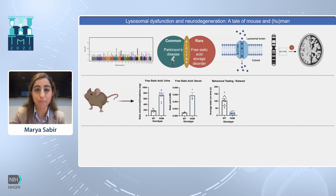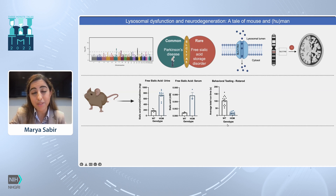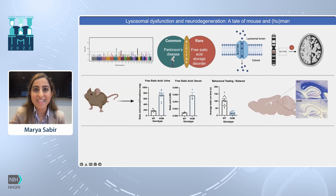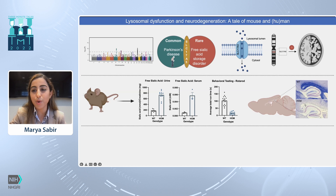Next, we performed behavioral testing using the rotor rod, and we can see that mutant mice have poor motor performance and coordination, which resembles human patients. And strikingly, in mutant mice, we have a complete loss of corpus callosum myelination when compared to wild type littermates.